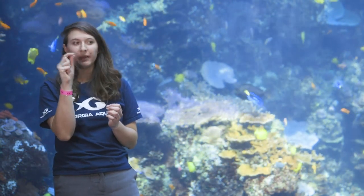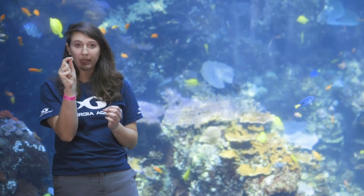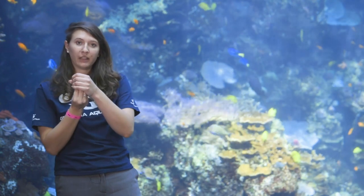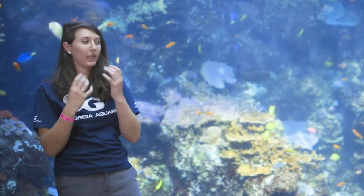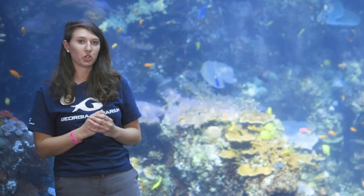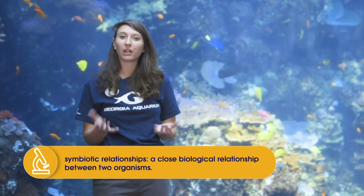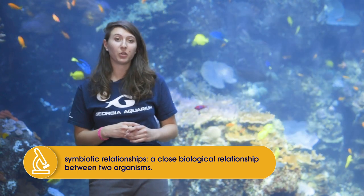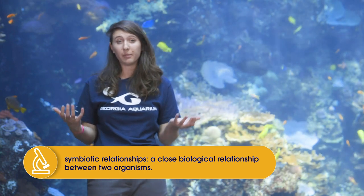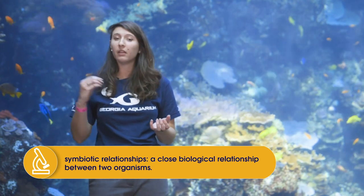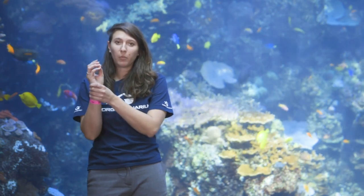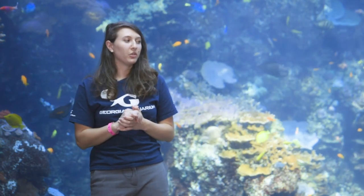Zooxanthellae are little microscopic organisms — too small to see with the naked eye — that live inside of the tissues of those coral polyp arms. They're able to bring them inside that coral polyp cup and they work together in a symbiotic relationship. The symbiotic relationship that corals have with zooxanthellae is actually called mutualism, meaning both the coral and the zooxanthellae are going to benefit from that relationship. The zooxanthellae is going to have a place to live within the arms of the coral polyp when they're brought inside, and they're going to undergo photosynthesis the way most plants can.